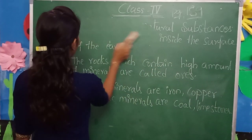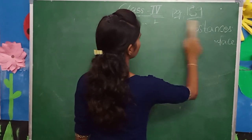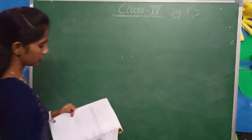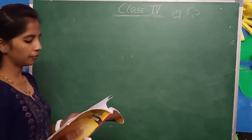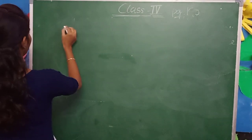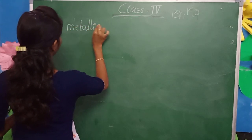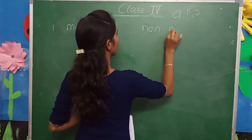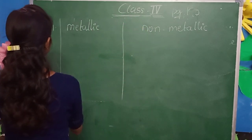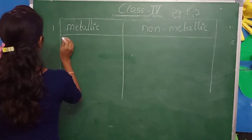Take out your notebooks, keep a heading, mineral resources, and write down the first question. What is the question? Differentiate between metallic and non-metallic minerals. So draw a table, metallic and non-metallic.